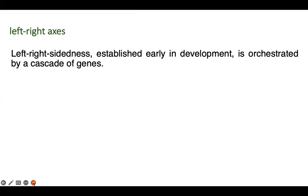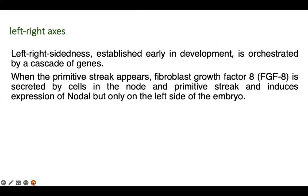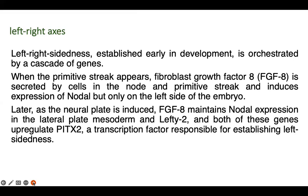The last axis is the left-right axis, orchestrated by a cascade of genes. When the primitive streak appears, fibroblast growth factor 8 (FGF8) is secreted by cells in the node and primitive streak and induces expression of Nodal — but only on the left side of the embryo. As the neural plate is induced, FGF8 maintains Nodal expression in the lateral plate mesoderm, and both Left2 and Nodal upregulate PITX2, a transcription factor responsible for establishing left-sidedness.